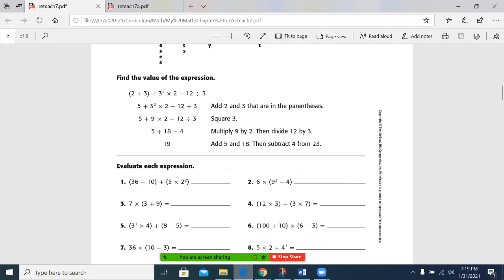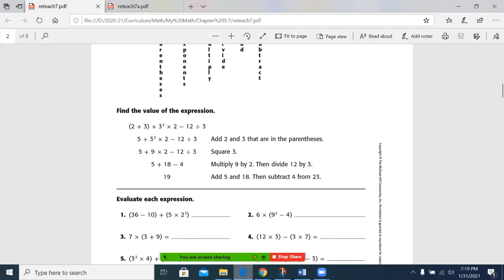We have a sample problem here. 2 plus 3 plus 3 squared times 2 minus 12 divided by 3. There's a lot going on there. But if I look up, parentheses go first. So 2 plus 3 and it's written right here as a 5. And then everything else was the same.